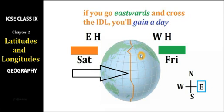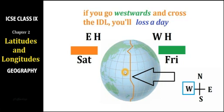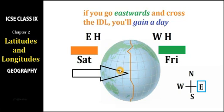On the other hand, if you go westward and cross the International Date Line, you lose a day. If you are coming from America and crossing westward when it is Friday 4 p.m., you immediately reach Saturday 4 p.m. You miss Friday night, the midnight, and Saturday morning entirely. So going westward across the International Date Line means you lose a day.